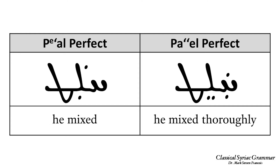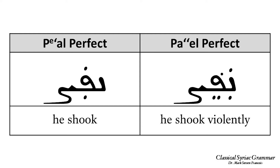Another example: 'chalat' means 'he mixed' in the Pe'al perfect, while 'chalet' means 'he mixed thoroughly' in the Pa'al perfect. And 'nefas' means 'he shook' in the Pe'al perfect, while 'napes' means 'he shook violently' in the Pa'al perfect.